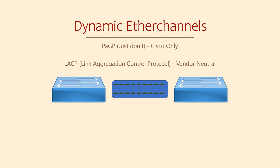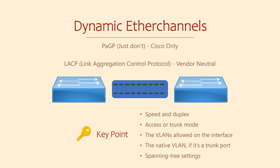LACP was originally part of the 802.3AD standard and was then moved into the 802.3AX standard. This makes it vendor neutral, so we can connect other vendors' switches to our Cisco switches. LACP is used to check that both sides are suitable to form an EtherChannel. Certain parameters need to match on the physical interfaces, including speed and duplex, access or trunk mode, the VLANs allowed on the interface, the native VLAN if it's a trunk port, and spanning tree settings.